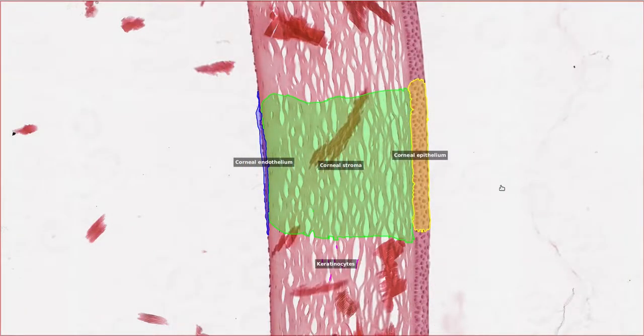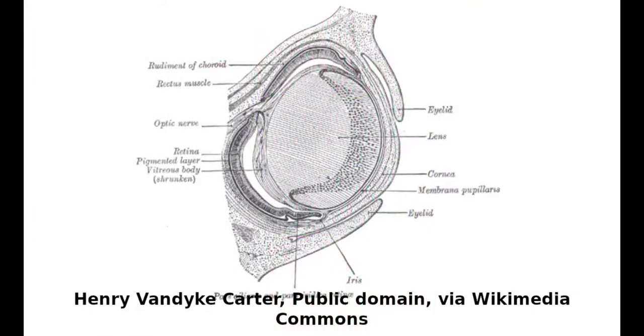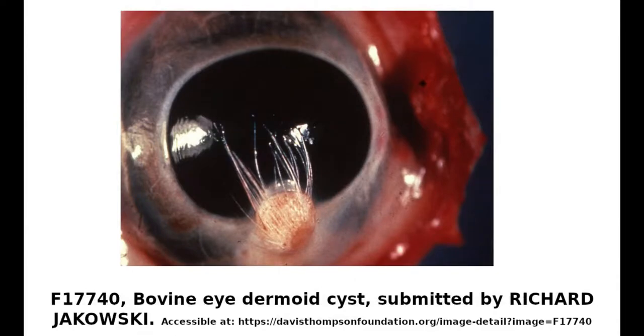The cornea is derived from the skin. The primary optic vesicle that emanates from the brain during fetal development orchestrates the differentiation to cornea rather than haired skin. This can go wrong sometimes, as demonstrated by the development of dermoids, which are hairy growths on the cornea.